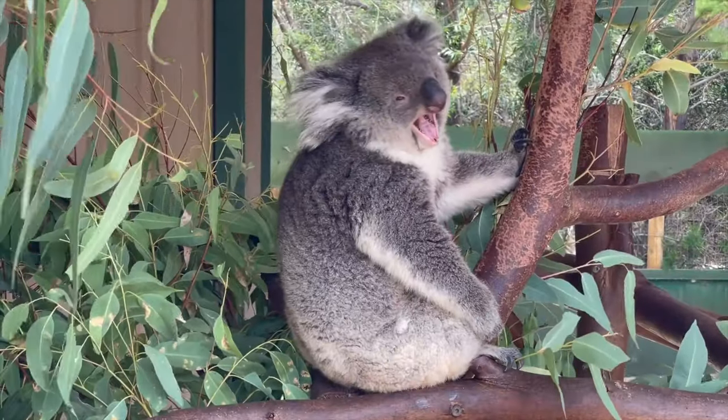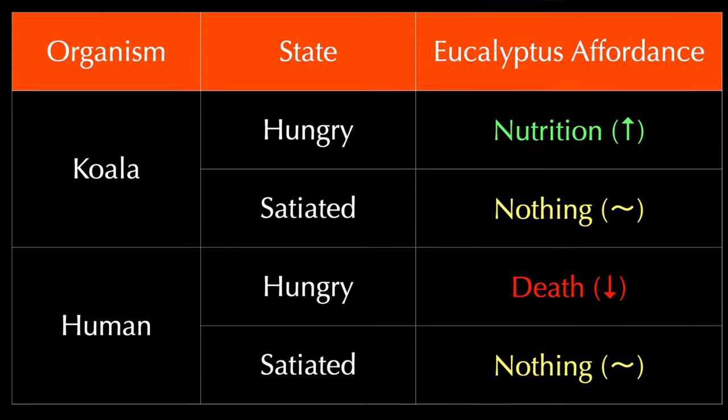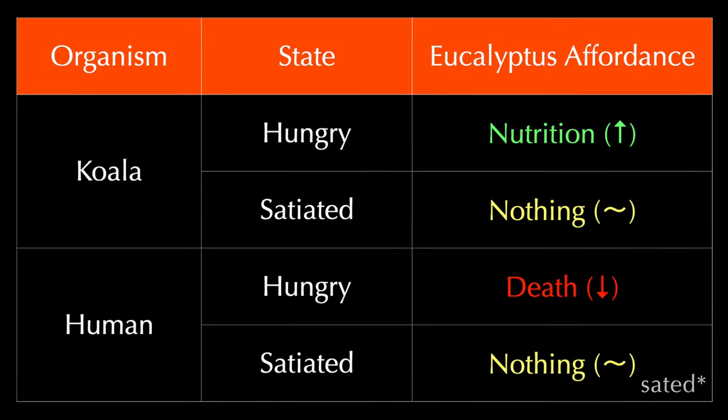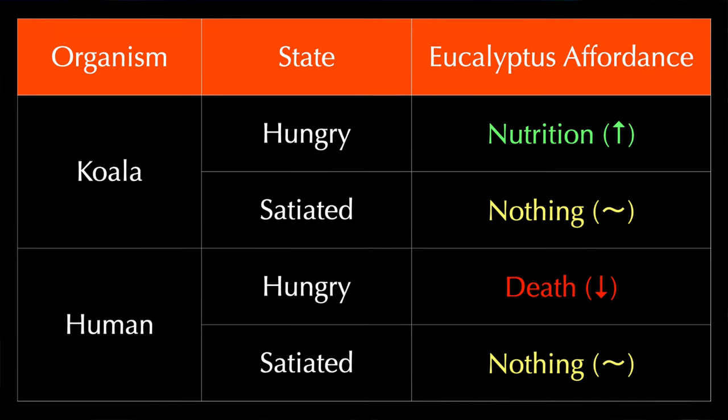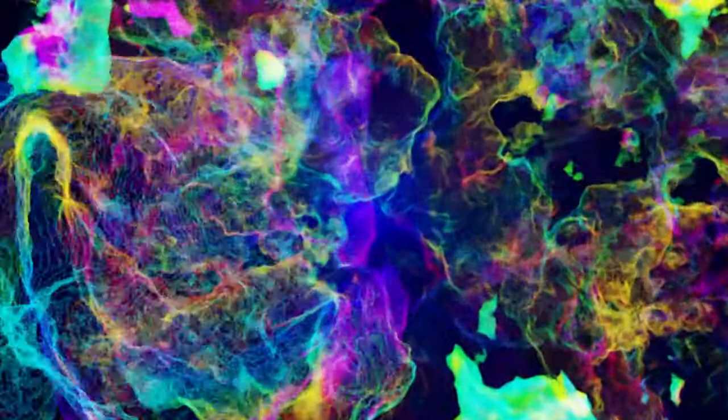We conclude that natural selection almost surely shapes perceptions of these structures to be non-veridical. Recall that fitness values are dynamic, unfolding based on context. Consider the fitness payoffs offered by eucalyptus leaves: for a hungry koala wanting to eat, they offer nutrition; for a sated koala wishing to mate, they offer nothing; for a hungry person wanting to eat, they offer death by cyanide; for a sated person wishing to mate, they offer nothing. The same leaves offer wildly different payoffs depending on the organism, its state, and the action. As the number of perceptions grows very large, objective reality gets lost in the process.